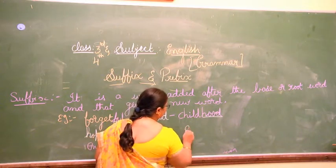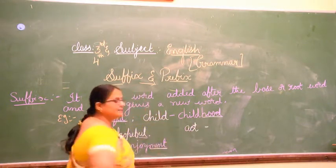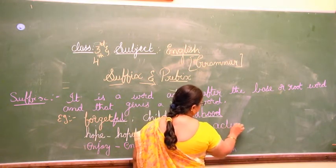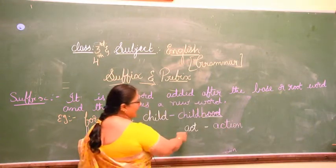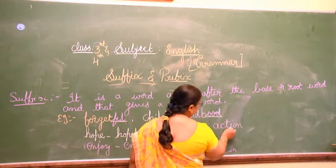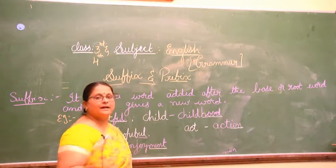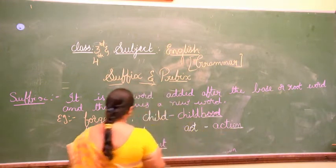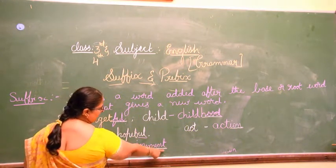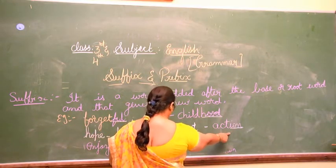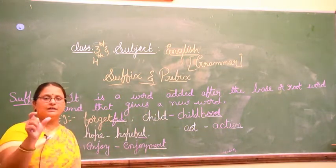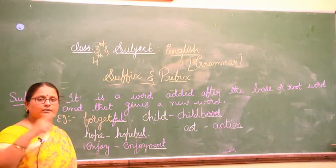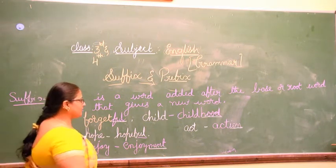One more: 'act'. A-C-T + I-O-N. What did I add to 'act'? I added 'ion', and it becomes a new word — 'action'. Here I added 'full', here I added 'ment', here I added 'ion'. So all these added words are called suffixes — added after the main word or the root word.